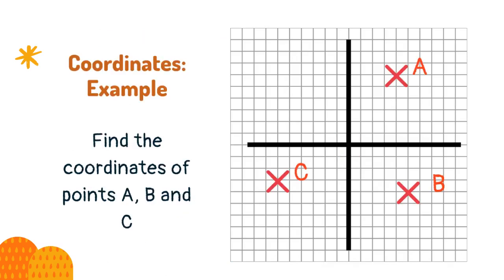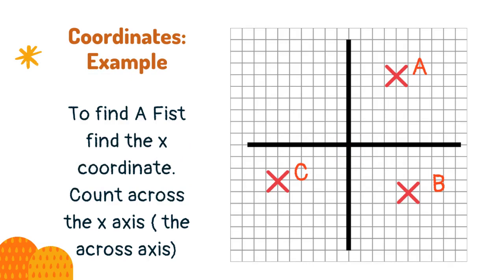Find the coordinates of points A, B and C. Pause the video and see if you can write the coordinates of those points. To find A, first find the x-coordinate. Count across the x-axis (the across axis).